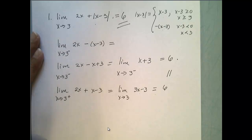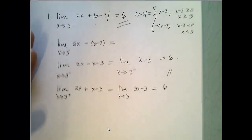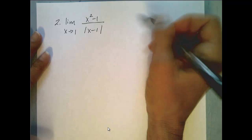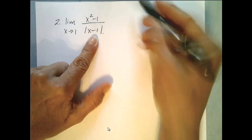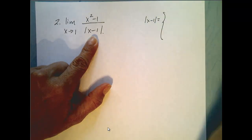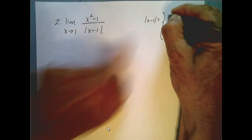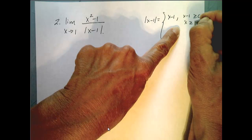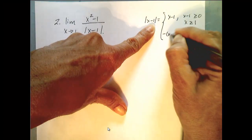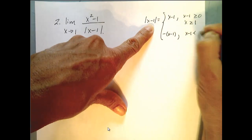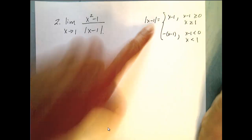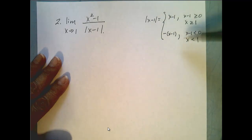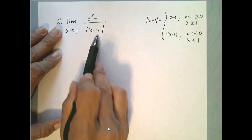Pause and look through those steps before continuing if this example was tricky for you. Now let's go to our second example, which involves fractions, factoring, and absolute values. I have an absolute value function so I'm going to rewrite it as a piecewise function. What's inside comes out when x is greater than or equal to 1, and the opposite comes out when x is less than 1.